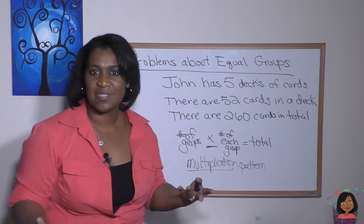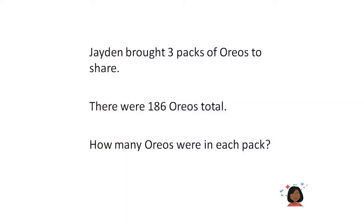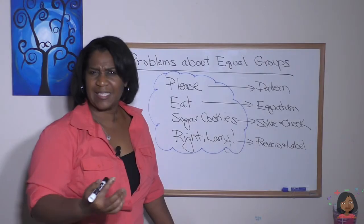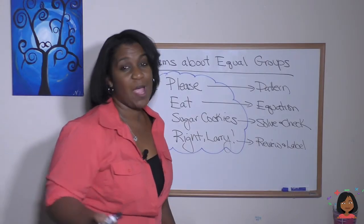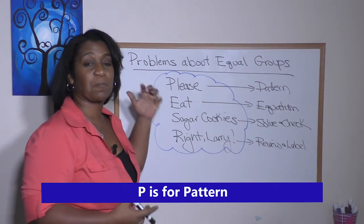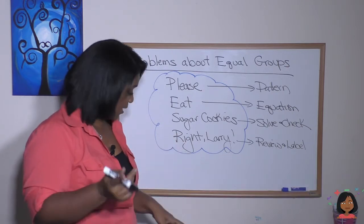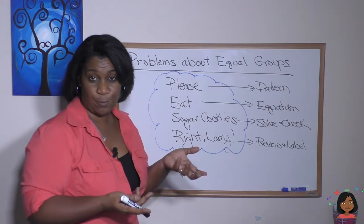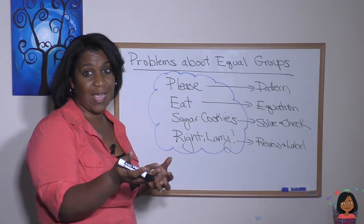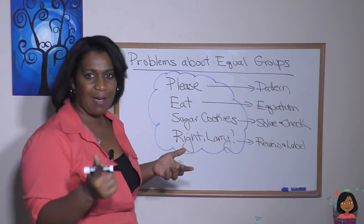Sugar cookies and Larry — see if you can use that to help solve the problem. Here's your first problem: Jaden bought three packs of Oreos to share. There were 186 Oreos total. How many Oreos are in each pack? We're going to use Please Eat Sugar Cookies Larry to solve this. The P stands for pattern. He had three packs — that's his number of groups — and we know the total was 186. So it sounds like this might be a multiplication pattern because it's about equal groups.